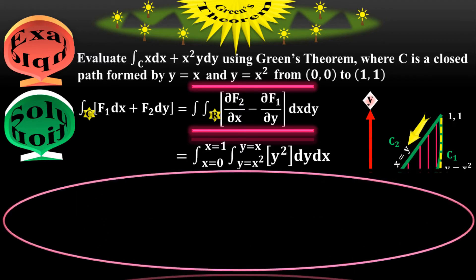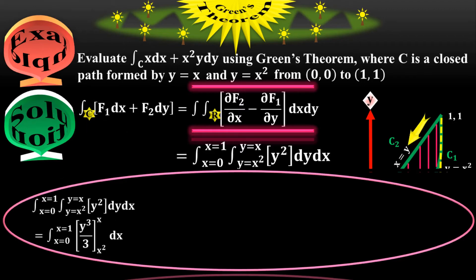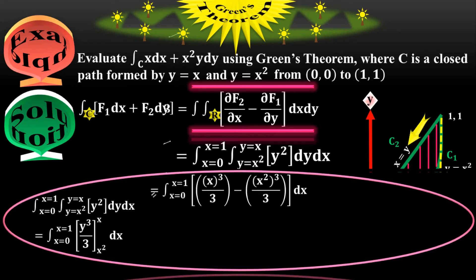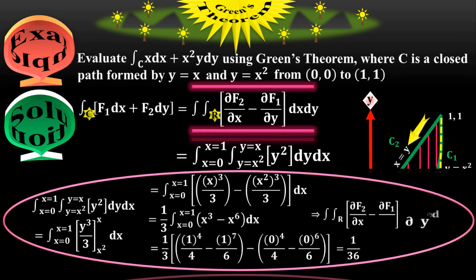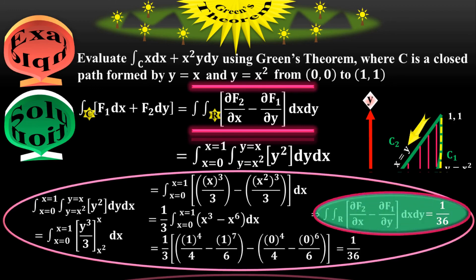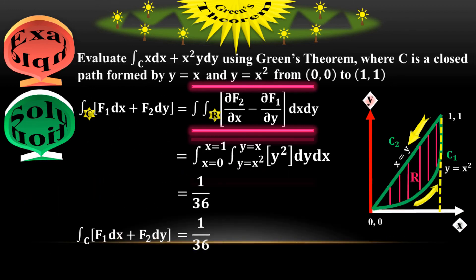Integrating first with respect to y gives y cubed over 3. Putting in the limits and taking 1/3 common gives x cubed minus x to the 6, to be integrated with respect to x. Integrating with respect to x gives x to the 4 over 4 minus x to the 7 over 7. Putting in the limits x equals 0 and x equals 1 gives a final value of 1/36. This is the final answer: 1/36.